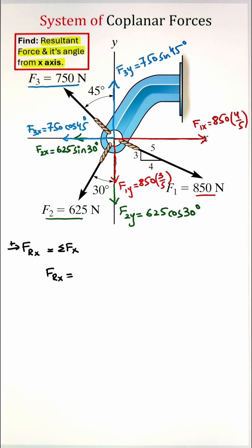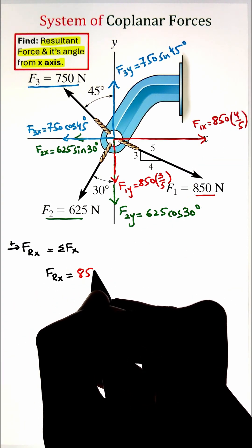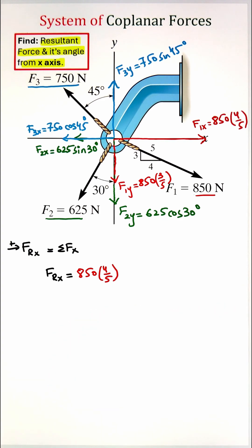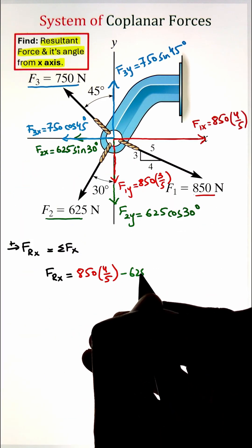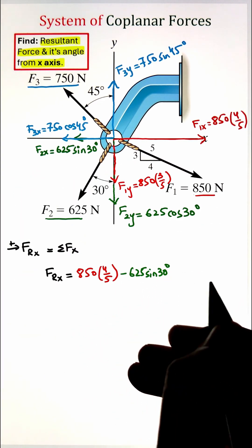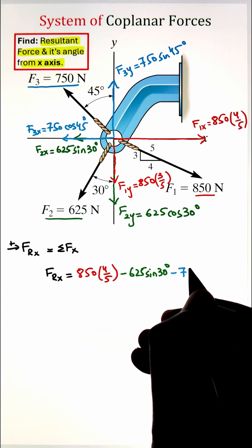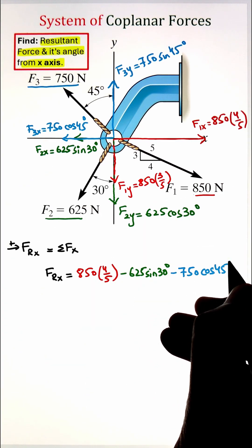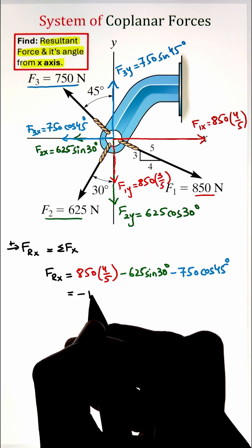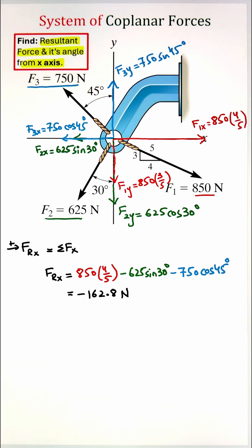we can start with our F1x that is pointed towards the positive x direction, so that's why it will be positive, whereas our F2x and F3x are in the negative x direction. Subtracting them, we get our resultant force of negative 162.8 Newton in the x direction.